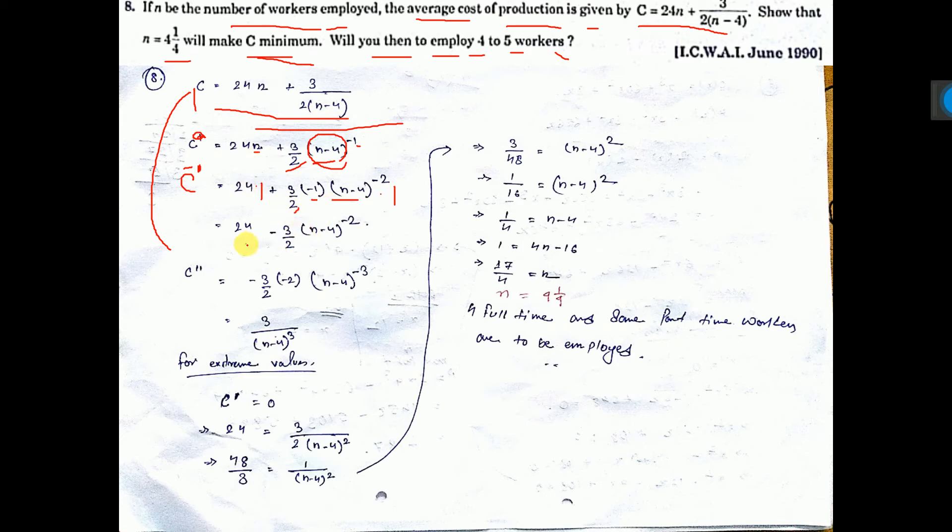Simplify, it is coming this. Again differentiate, then it will be C double dash. 24 is constant, it will be 0, it is there. Now x to the power N, x to the power N formula is N times x to the power, that means this to the power minus 2 minus 1, that is minus 3. Again d/dx of N minus 4, that is 1. N differentiation 1 and 4 differentiation 0 is not written.